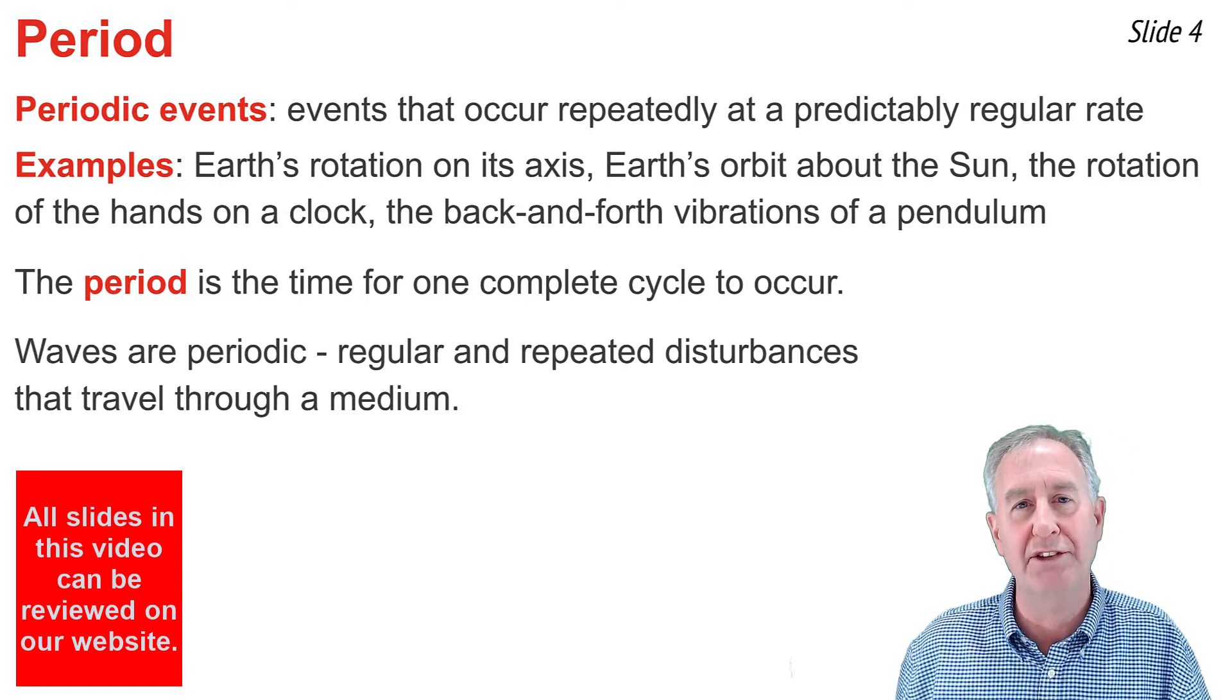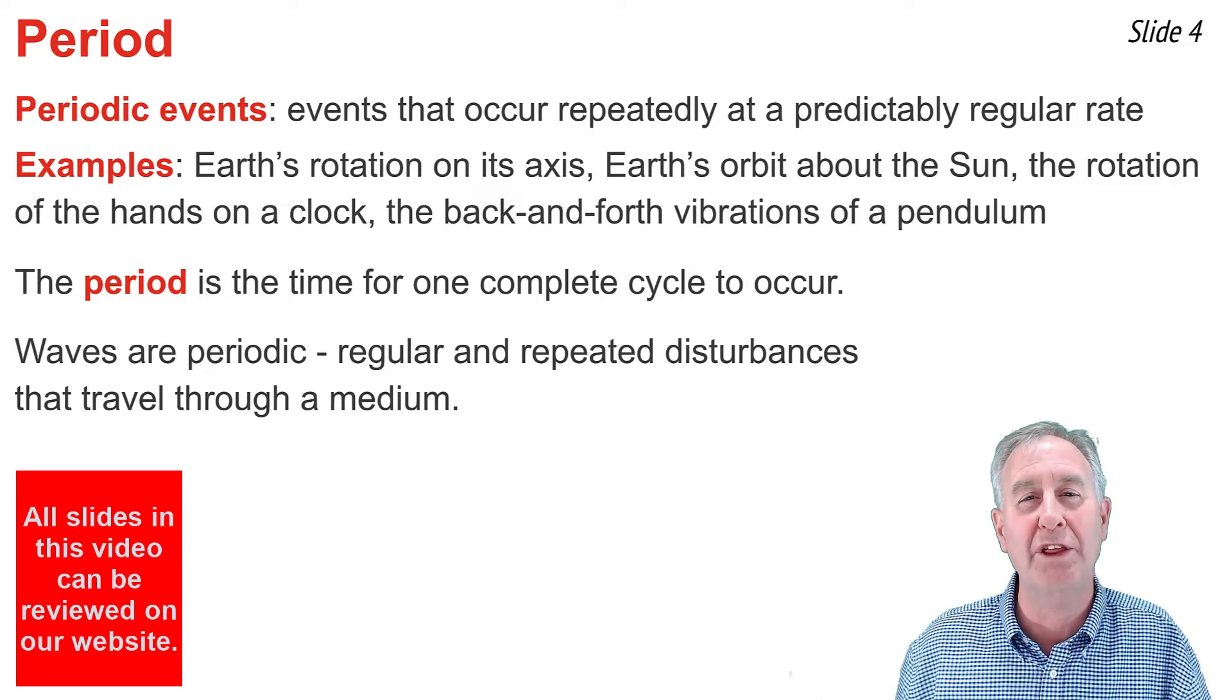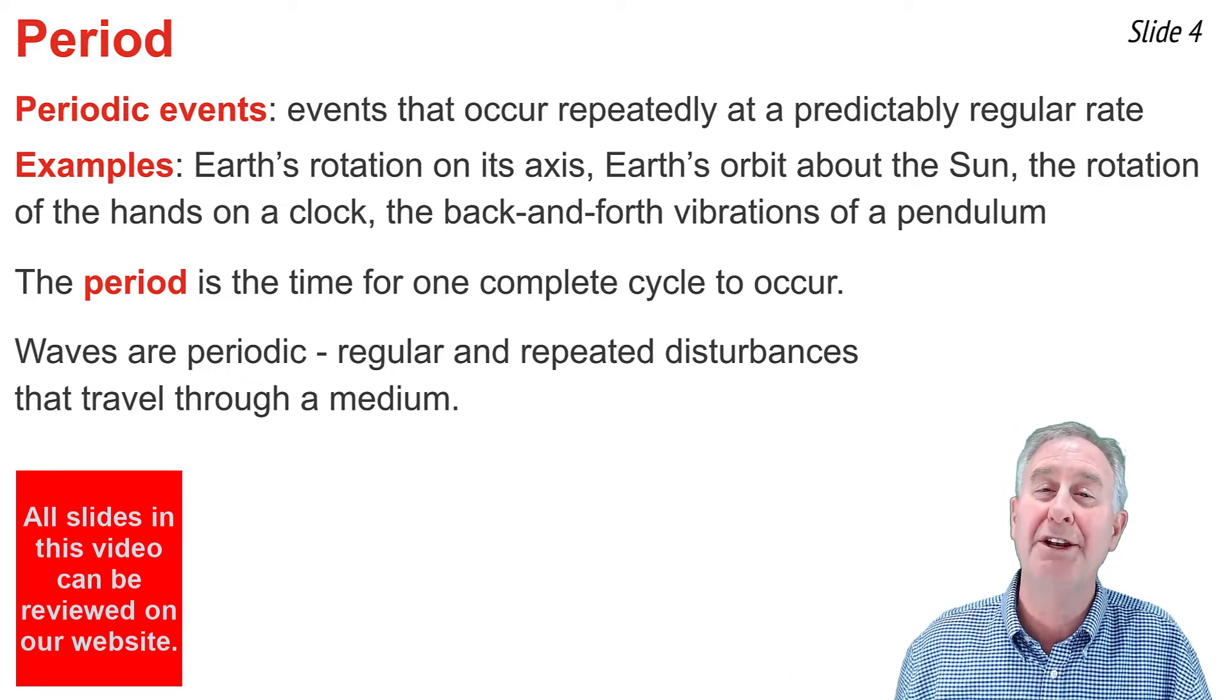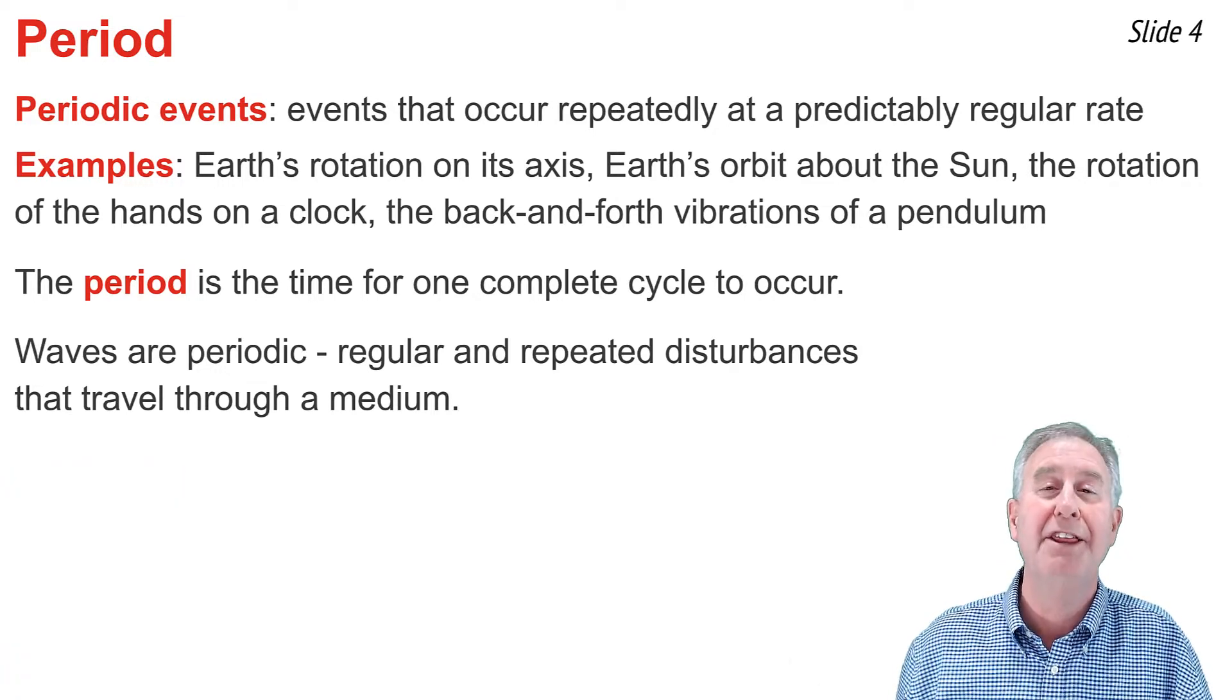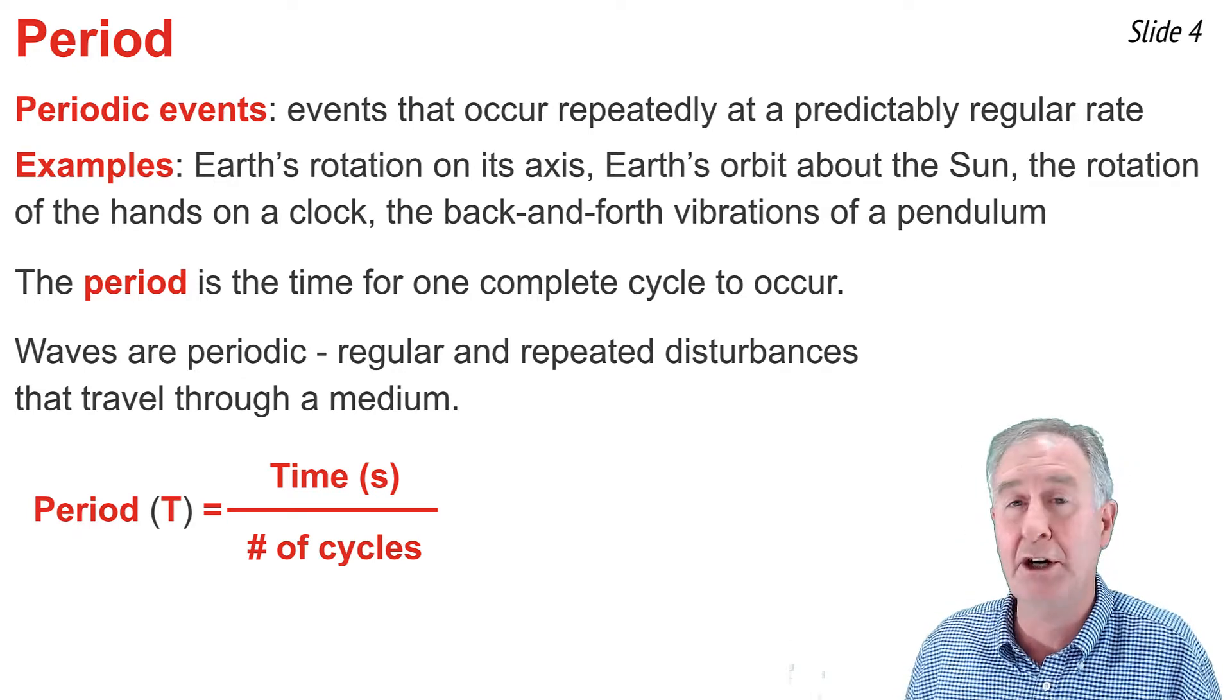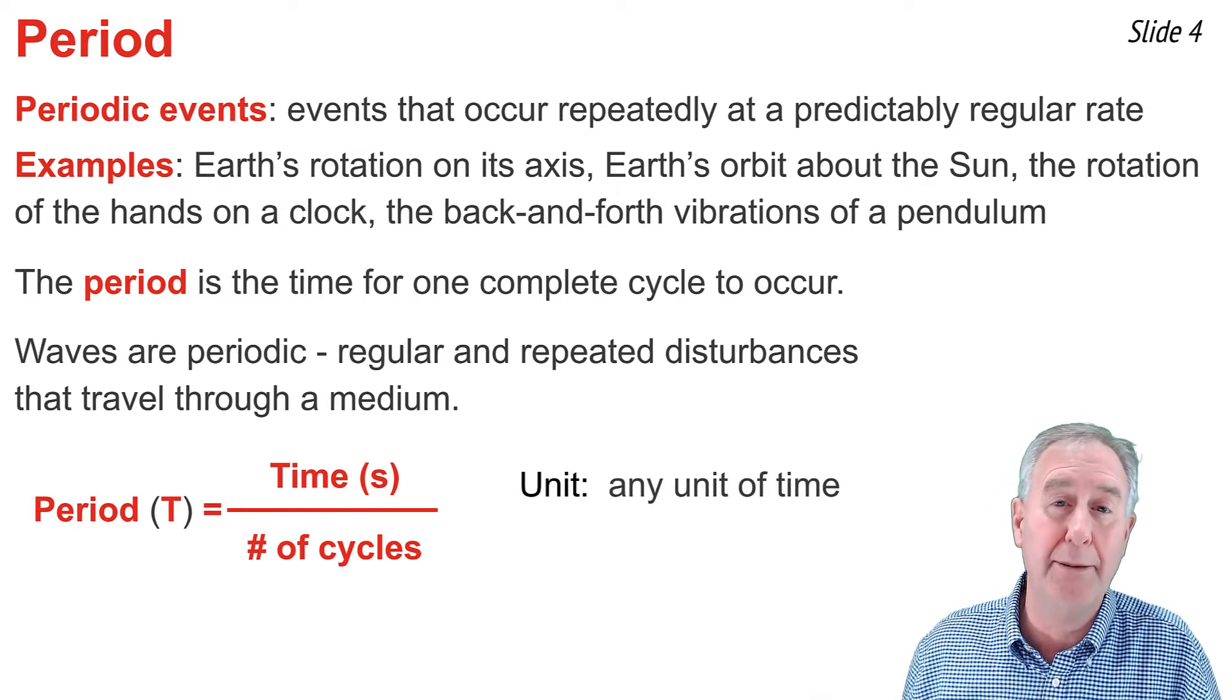Waves are periodic events. They're regular and repeated disturbances that travel through the medium, causing particles of the medium to vibrate back and forth about their fixed position in a regular and repeated manner. If you wanted to determine the period of a wave, you would count the number of cycles of vibrations that a particle would make in a given amount of time. Then you would say that the period is equal to the time divided by the number of cycles. The symbol for the period is the letter T, because period is a time, and the unit for period is some unit of time, like most commonly the seconds.